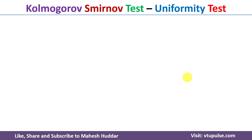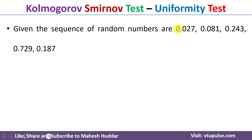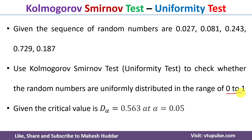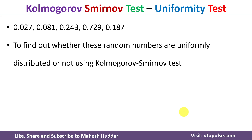In this case, we have been given 5 random numbers: 0.027, 0.081, 0.243, 0.729, and 0.187. We use the Kolmogorov-Smirnov test to check whether the random numbers are uniformly distributed in the range of 0 to 1. The critical value is given as 0.563 at alpha equal to 0.05.